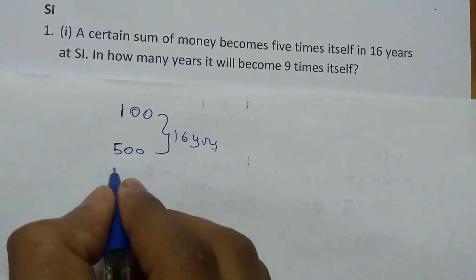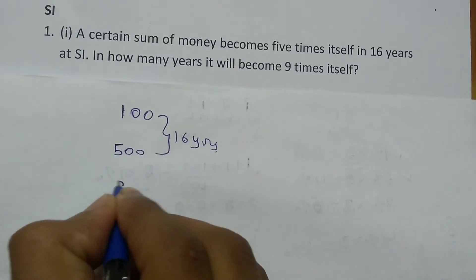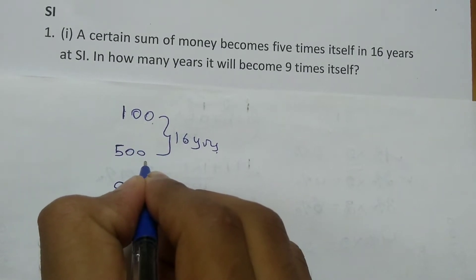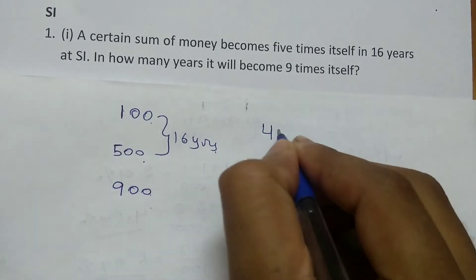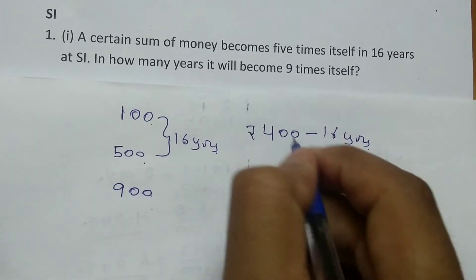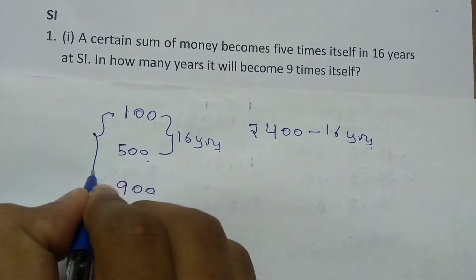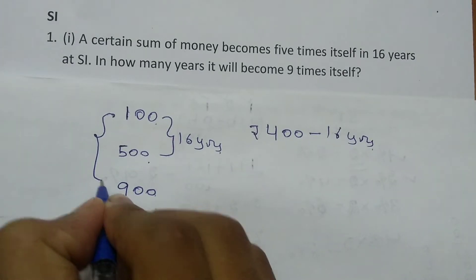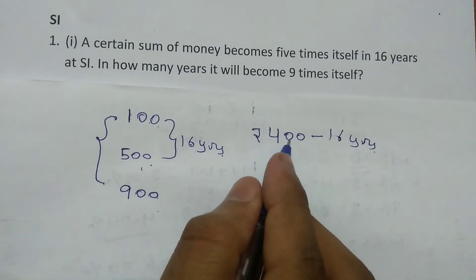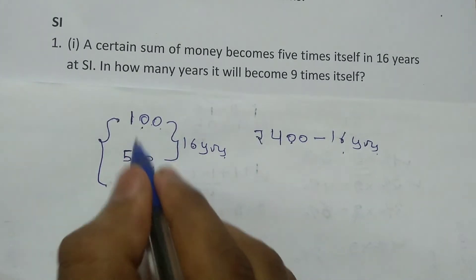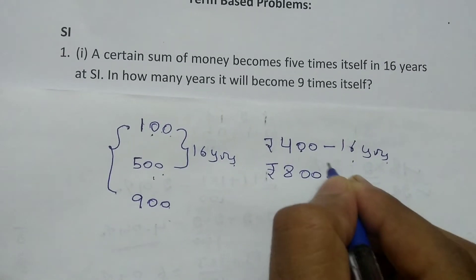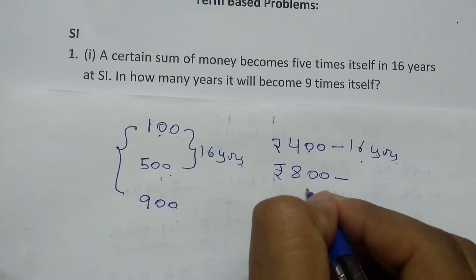In how many years will it become 9 times? Nine times means 100 rupees must become 900 rupees. From 100 to 500 is an increase of 400 rupees, which happened in 16 years. From 100 to 900 is an increase of 800 rupees. Now use the unitary method: if 400 rupees increase in 16 years, then 800 rupees will take twice as long.